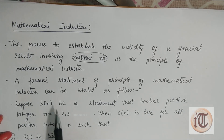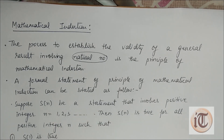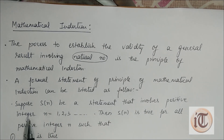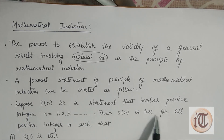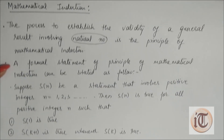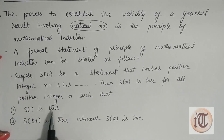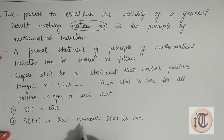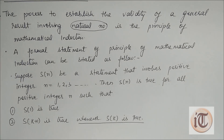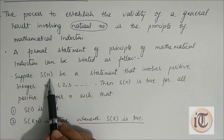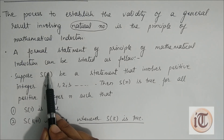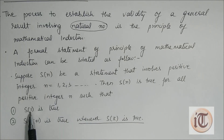Suppose S(n) be a statement that involves some positive integer n = 1, 2, 3 and so on. Then S(n) is true for all positive integers such that S(1) is true, and S(k+1) is true whenever S(k) is true. This means that if we have a statement S(n), in the first step we put n = 1 and find out whether the statement is true or not.